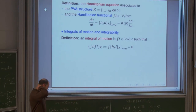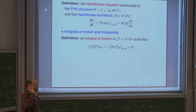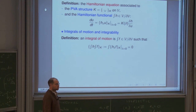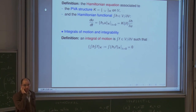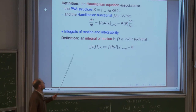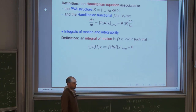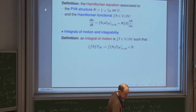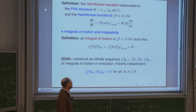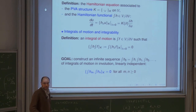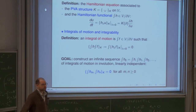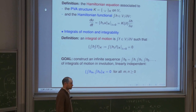Whenever you have a Hamiltonian equation, the first thing to look for are integrals of motion, because they allow you to solve the equation. An integral of motion is a local functional that Poisson commutes with the Hamiltonian functional and therefore remains constant. The usual goal is to find sufficiently many integrals of motion — at least infinitely many linearly independent integrals of motion that are in involution, meaning they Poisson commute with each other.